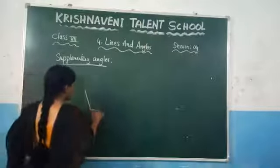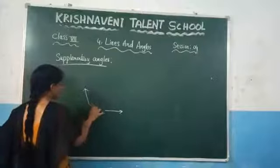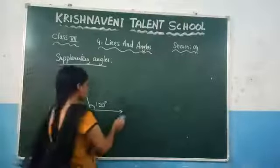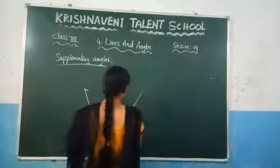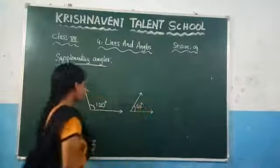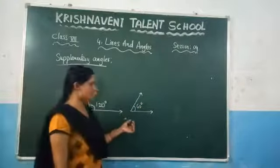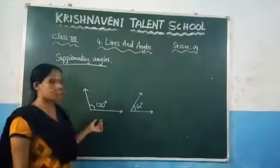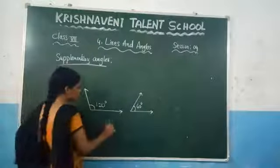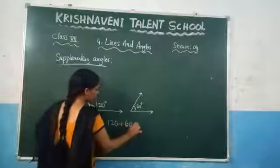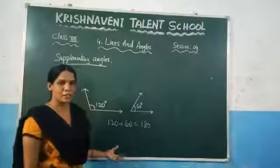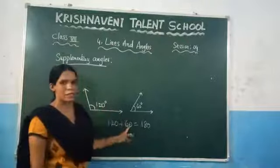Let us consider here two angles. Consider one angle of 150 degrees and one more angle of 60 degrees. To check whether these two angles are supplementary or not, you have to take the sum of these two angles. So let us take the sum: 150 plus 60. You are getting the answer which is 180. Since the sum of these two angles is 180, you can say that these two angles are supplementary angles.